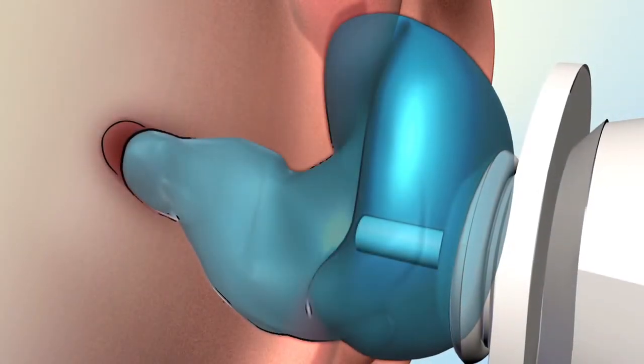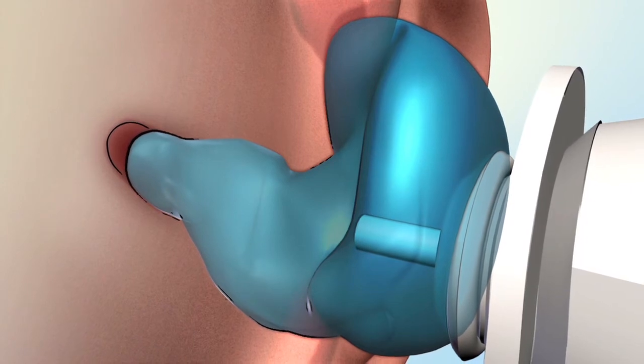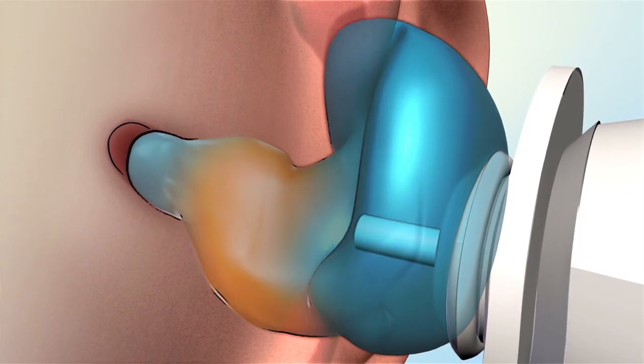The Lantos scanner can measure canal wall elasticity by varying the pressure inside the membrane. Identifying this elasticity will help in mold material selection and precision of fit.